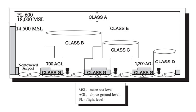In Denmark, Class A is generally used above FL 195. Class B is not used. Class C is used for busy terminal areas, namely Billund TMA and København TMA; all airspace above FL 195 is also Class C. Class D is used for all control zones and most terminal areas. Class E is generally used for all airspace from 3,500 ft to FL 195, with the exception of TMAs and airspace over the North Sea. Class F is not used. Class G is used below 3,500 ft, except around controlled airports, and below FL 195 over the North Sea.